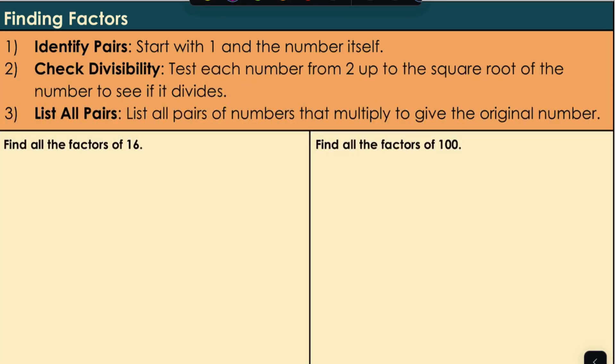We will follow our 3 step process. So first up, we have the factors of 16. Start with 1 and the number itself. So we have 1 multiplied by 16. How about 2? So step 2, check divisibility. 2 multiplied by 8.